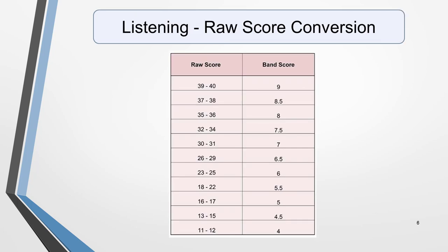This score out of 40 is then converted to the IELTS 9 band scale. So if, for example, you get a raw score of 30 correct answers, you'll be awarded band score 7.